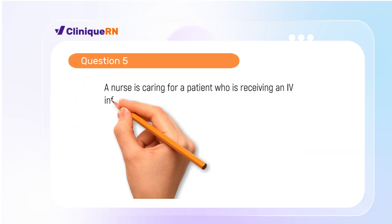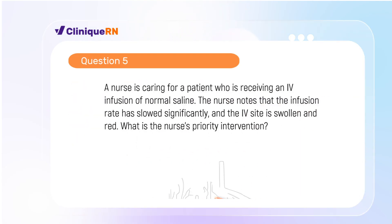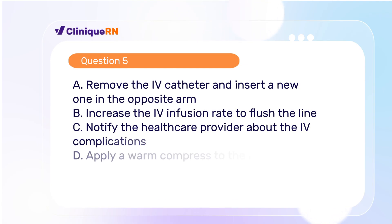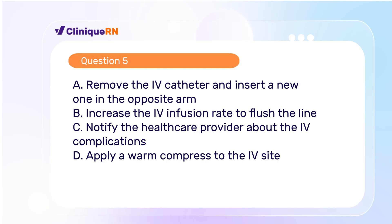Question 5. A nurse is caring for a patient who is receiving an IV infusion of normal saline. The nurse notes that the infusion rate has slowed significantly and the IV site is swollen and red. What is the nurse's priority intervention? A. Remove the IV catheter and insert a new one in the opposite arm. B. Increase the IV infusion rate to flush the line. C. Notify the healthcare provider about the IV complications. D. Apply a warm compress to the IV site.